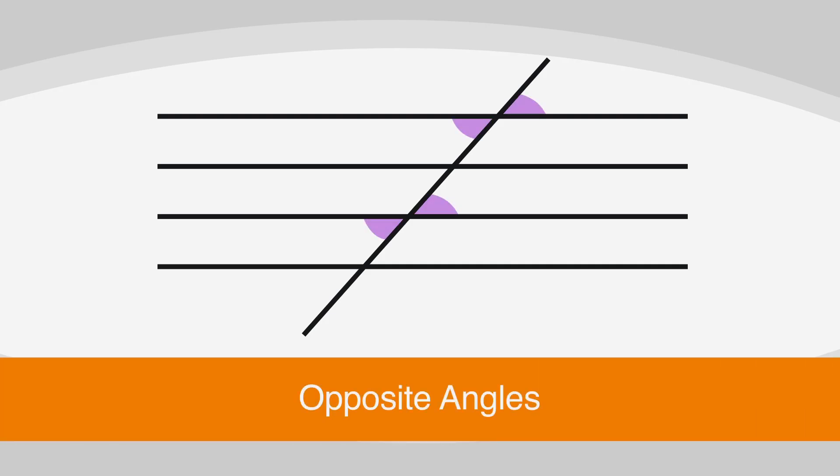Opposite angles are easy to identify because they are created by the same two intersecting line segments. Also easy to ID are corresponding angles. Corresponding angles are safe to use because they are easy to identify. They are all pointed in the same direction and they have the same shape.